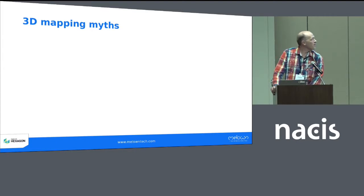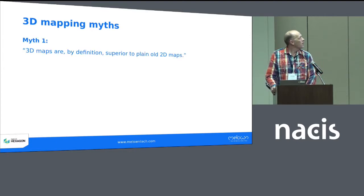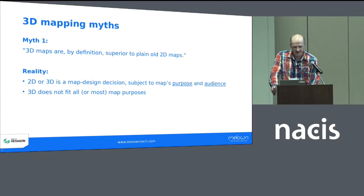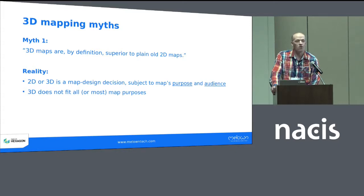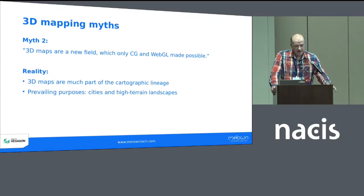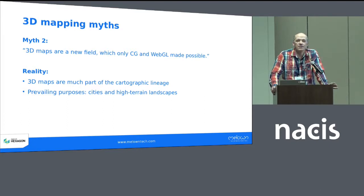Additionally, there is lots of mess in 3D mapping technology. One myth is that 3D maps are, by definition, superior to 2D maps. That might sound funny to you, but in my field — computer graphics — there are lots of people that think exactly this. In reality, 2D or 3D is a map design decision which is subject to the map's purpose and audience, and 3D does not fit all or even most map purposes. Another myth: 3D maps are a new field which only computer graphics and WebGL made possible. In reality, 3D maps are very much part of the cartographic lineage, and the prevailing purposes are cities and high-terrain landscapes.